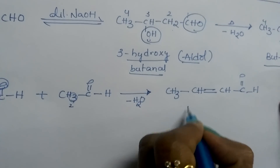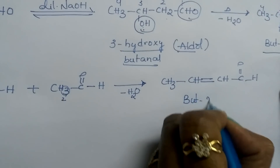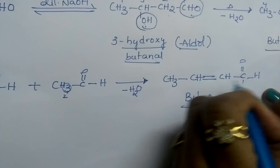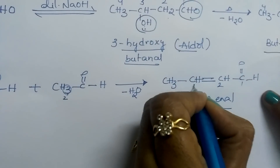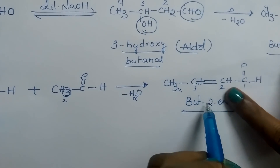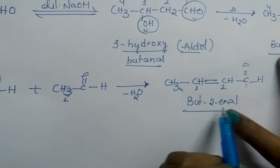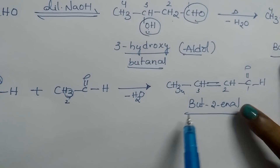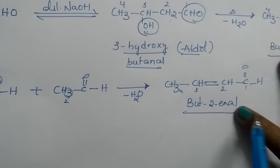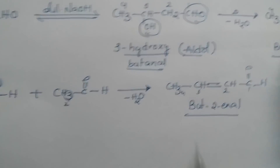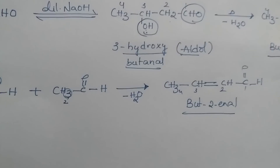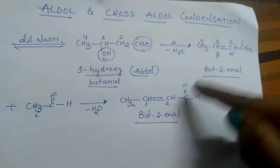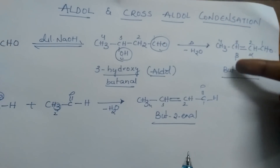This product is called but-2-enal: 1, 2, 3, 4 carbons — so 'bute'; the double bond is at the second position — 'ene'; and there is an aldehyde group — 'al'. So the product is but-2-enal. Both reactants are the same, and we wrote the product in a short way.